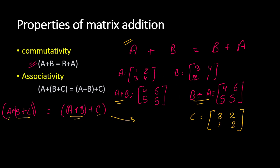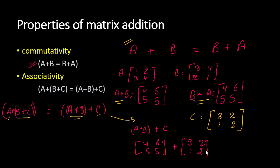For the right-hand side, we have A + B = [4, 6; 5, 5]. Now we add C = [3, 2; 1, 2] to it: 4+3=7, 6+2=8, 5+1=6, and 5+2=7. So the RHS result is [7, 8; 6, 7].